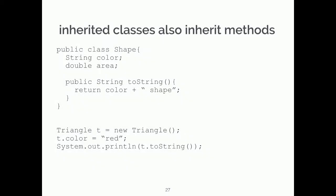Everything we just talked about with inheritance also applies to methods. Any method I put in my base class gets inherited by any class that extends it. For example, in Shape I've added the method toString, which prints color plus 'shape' — so it prints 'I'm a red shape' or 'blue shape' and so on. If I instantiate a Triangle, set its color to red, and call toString, what gets printed? Red shape.